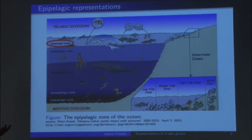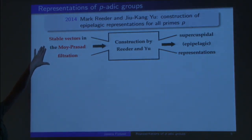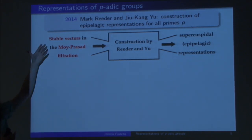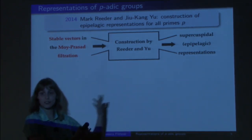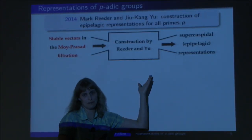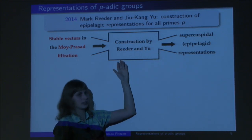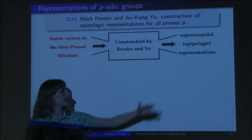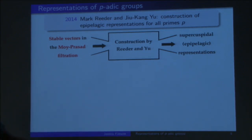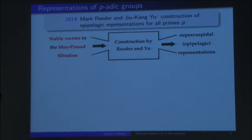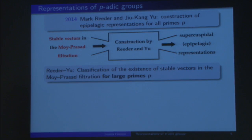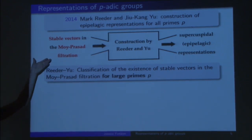How does the construction work? As input, they take something called a stable vector and a Moy-Prasad filtration — just take this as the name for the input. Then they do some construction which is pretty straightforward: it's just compact induction, which everyone in representation theory knows very well. The output are these representations. So all we really need are these stable vectors in the Moy-Prasad filtration. Reeder and Yu gave a classification of the existence of these stable vectors.